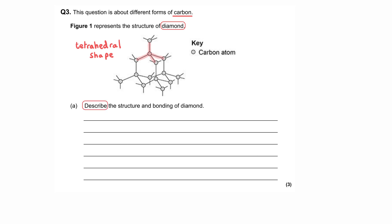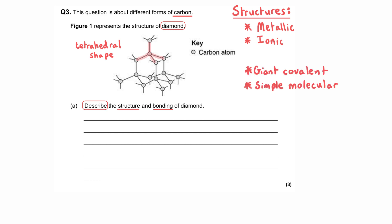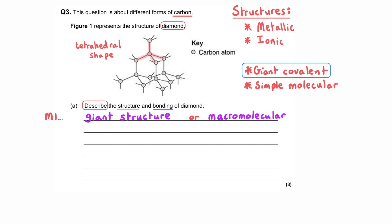We've been asked to describe the structure and bonding of diamond. The structure refers to what type of substance diamond is, and there are four options: metallic, ionic, giant covalent, and molecular covalent. Diamond is a giant covalent structure, sometimes referred to as macromolecular — either term would be accepted for the first marking point.